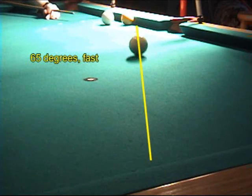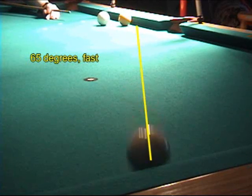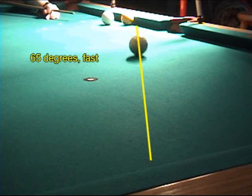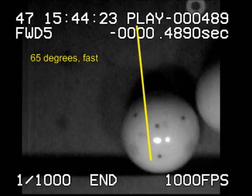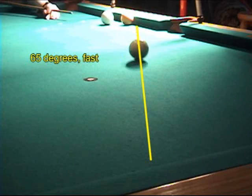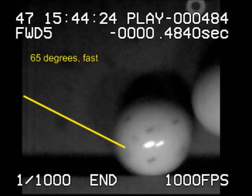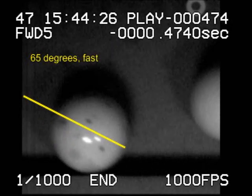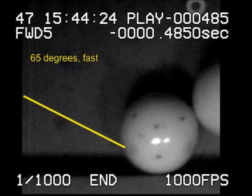We show the rebound angle line in different colors for each shot based on speed and conditions. Yellow will always indicate typical conditions at fast speed. A super slow motion top view is used to show the initial angle and induced spin after rebound.